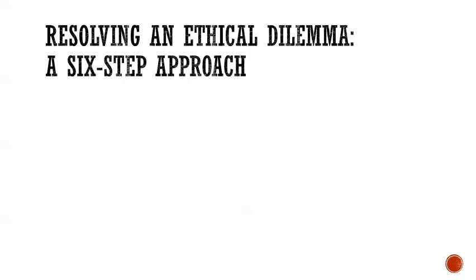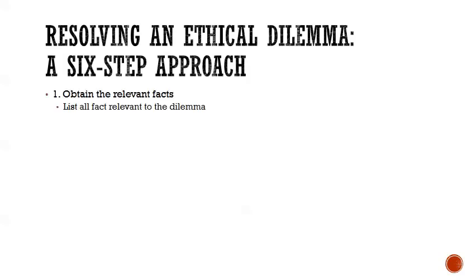In the case, we're going to use a six-step approach to resolve the ethical dilemma — this is what you follow when you see the case that you're assigned. First, obtain all the relevant facts. Whatever the situation is, list all the facts relevant to the dilemma. In other words, to decide whether something is ethical or not, you have to know all of the facts.